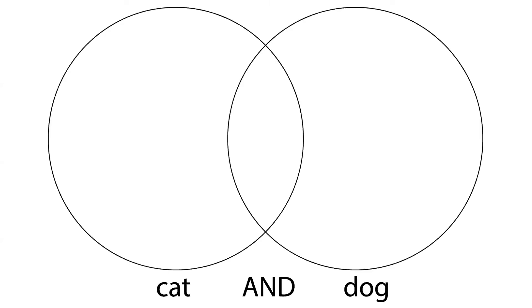One of the easiest ways to understand how Boolean operators work is to use a Venn diagram. If we type into the search box in a database the search string cat and dog, we are using the Boolean operator AND to tell the search engine that we only want results back that have both the words cat and dog in them.